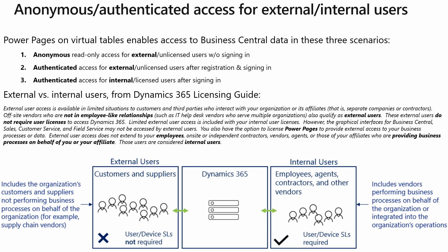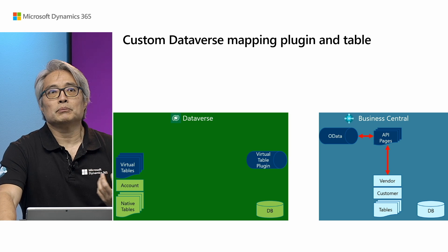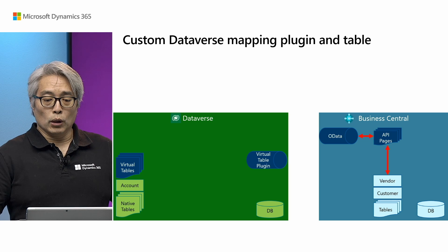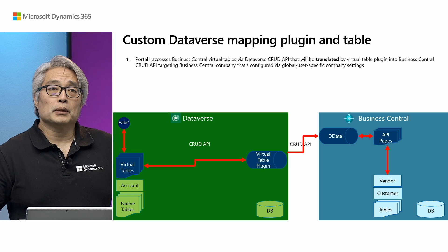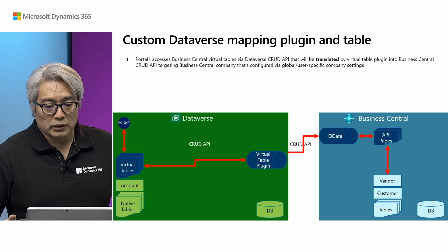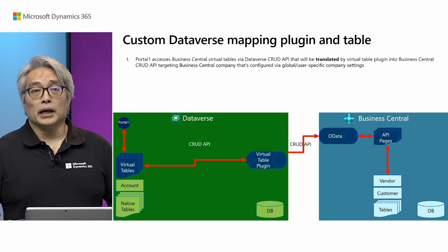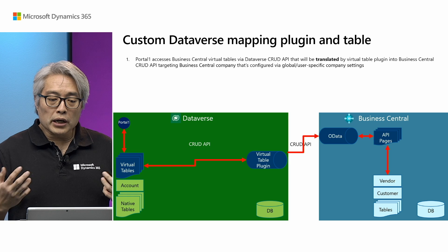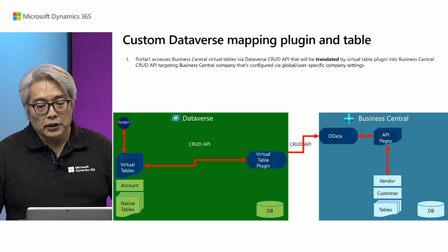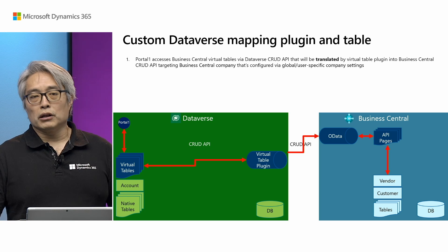That illustrates the difference between external and internal users. Now let me show how the custom Dataverse mapping plugin and table work to allow multi-company support. In the standard Power Pages portal access to Business Central Virtual Tables, it uses a Dataverse CRUD API that is translated by the Virtual Table plugin into a Business Central CRUD API targeting the Business Central company configured in the global or user-specific company settings — this is the standard behavior that's been around for a while.